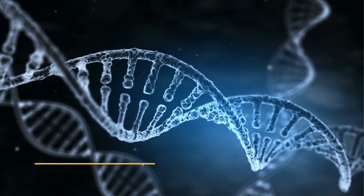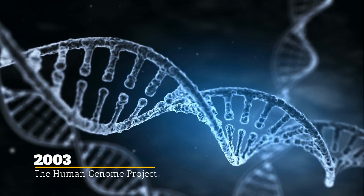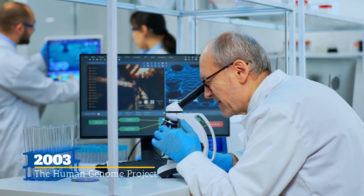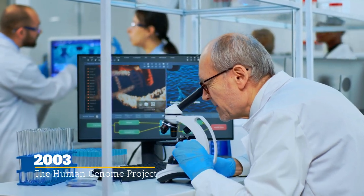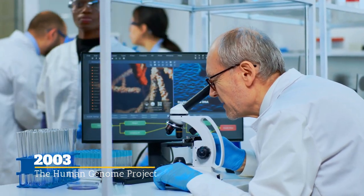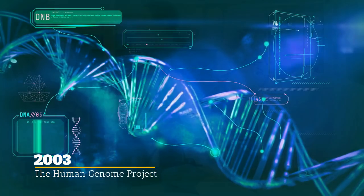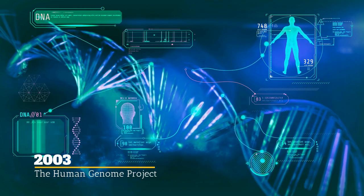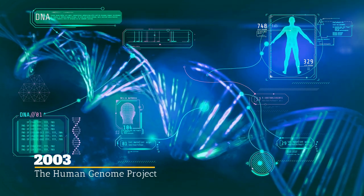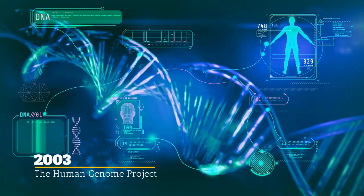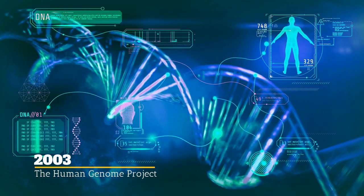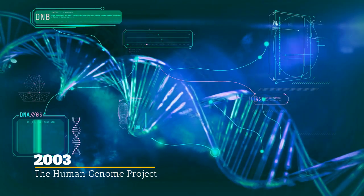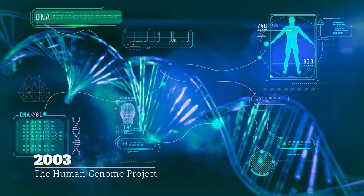The Human Genome Project was declared complete on April 14, 2003. This was an international scientific research project with the goal of determining the base pairs that make up human DNA. They actually covered somewhere between 90 to 99 percent of the human genome in that first effort, but continued working since then and are considered to have a complete map of the human genome as of January 2022.